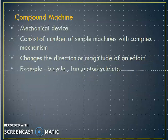A compound machine is a mechanical device which consists of a number of simple machines with a complex mechanism and changes the direction or magnitude of an effort. Examples of compound machines are bicycle, fan, motorcycle, etc.